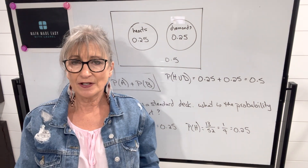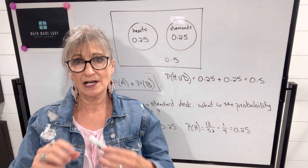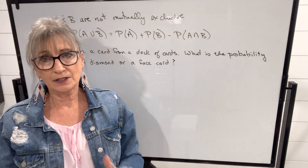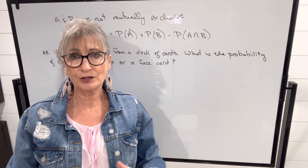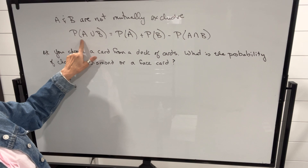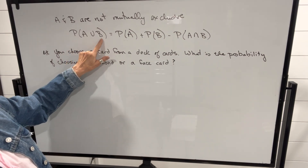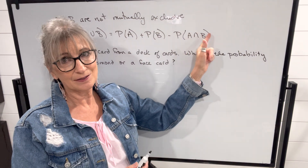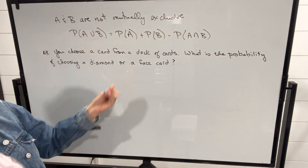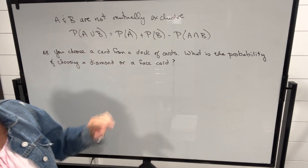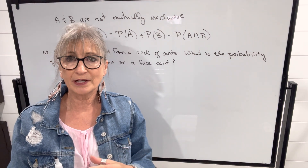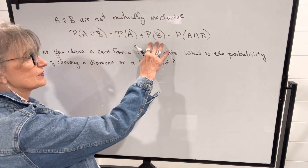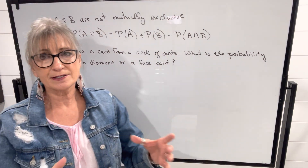Now let's look at how we do Venn diagrams when events are not mutually exclusive, meaning the circles overlap. When outcomes are not mutually exclusive and share common elements, our rule changes a little bit. The probability of A or B equals the probability of A plus the probability of B, but then you have to subtract the probability of A and B. For example, if we choose a card from a deck, what's the probability of choosing a diamond or a face card? This is different because there are face cards that are also diamonds, so these two events are not mutually exclusive. We need to use this formula, and I'm going to find each probability and set up a Venn diagram.